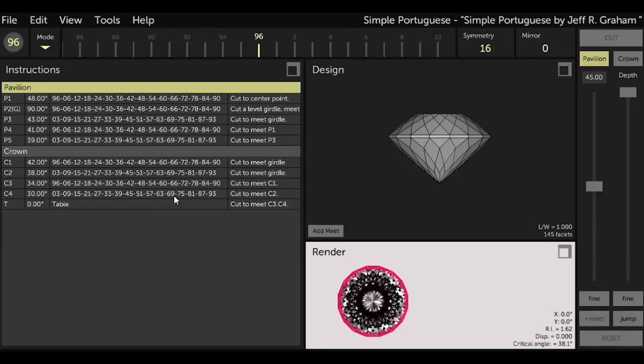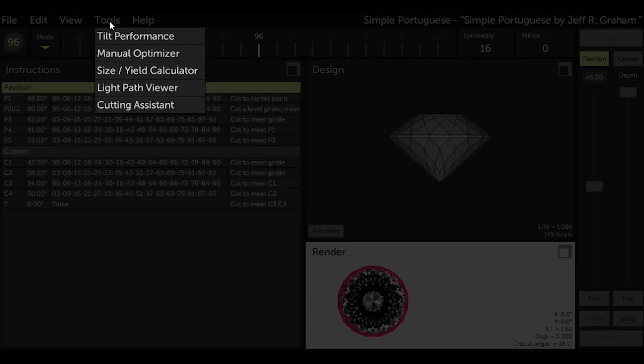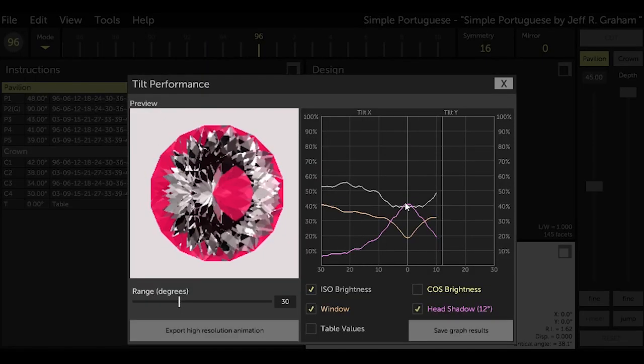After opening the simple Portuguese design in the Gem Cut Studio program, I used the manual optimizer feature to see if I could improve on the cutting angles of the design for Tanzanite based on the refractive index. Tanzanite has a refractive index of 1.69 to 1.7. In the interest of time, I won't explain these features in detail here.